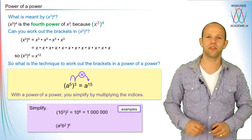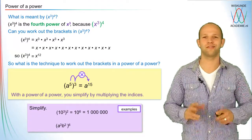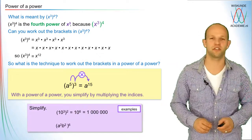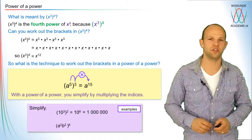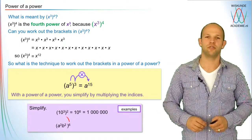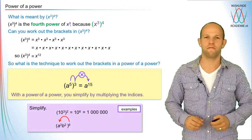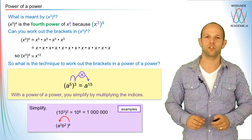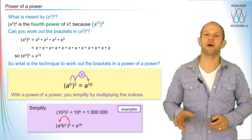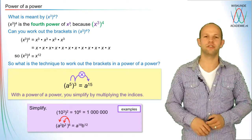Second example: a to the power 3 times b squared, all to the power 6. How do you work out the brackets and simplify this? You take the sixth power of a to the power 3, which gives a to the power 18, and then the sixth power of b squared, which gives b to the power 12.